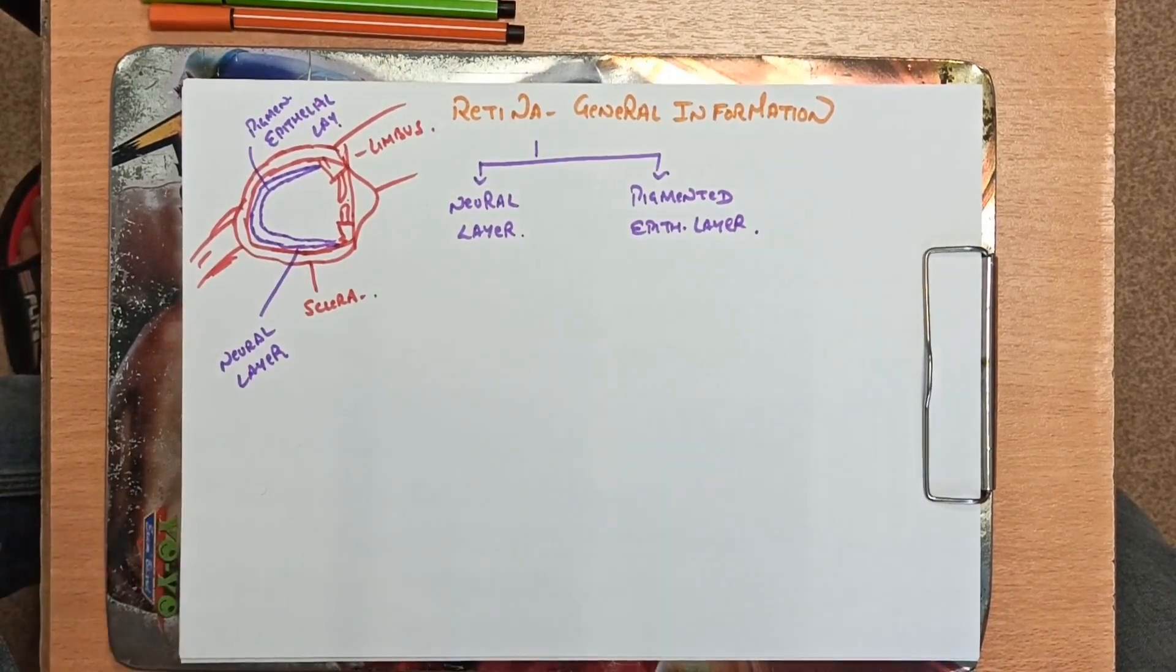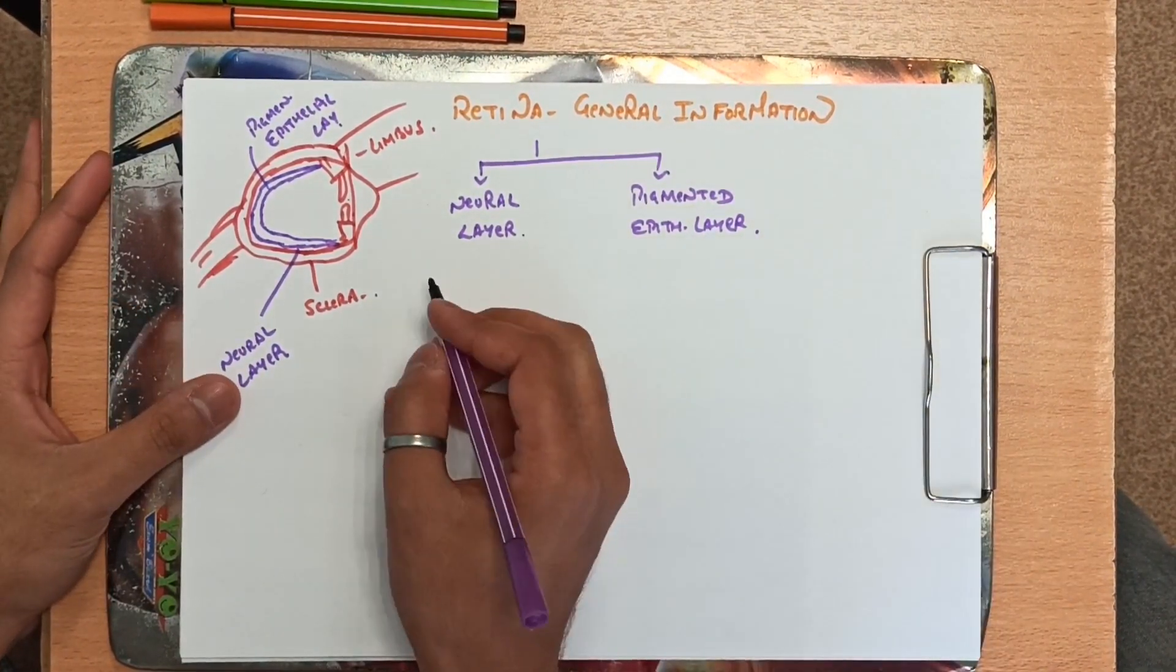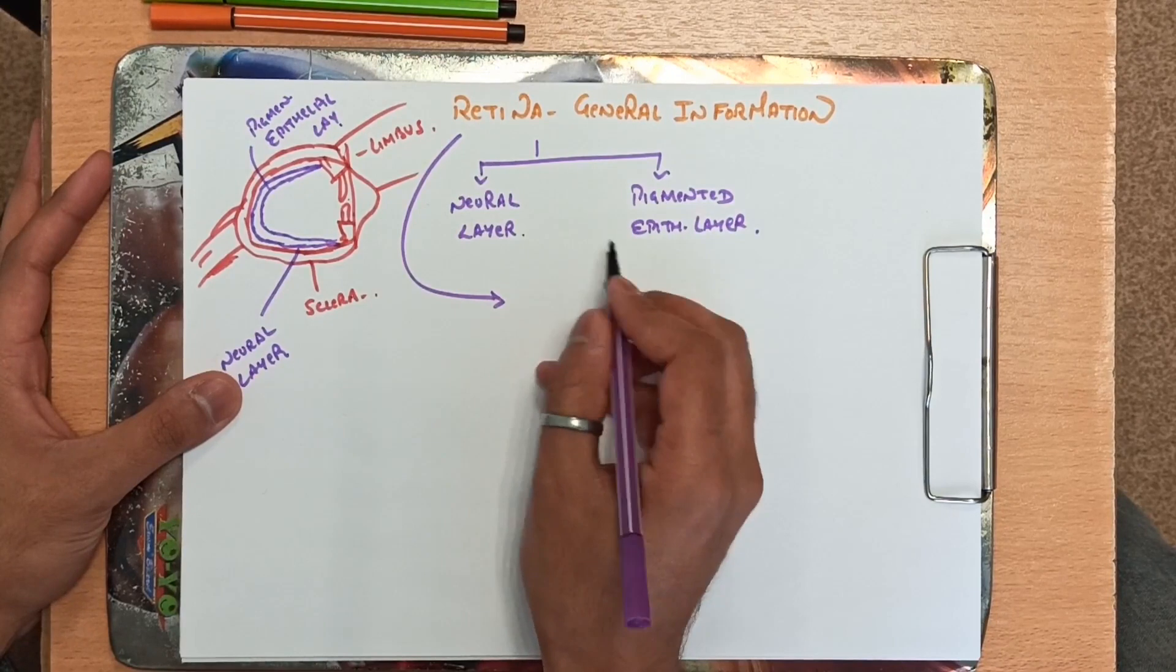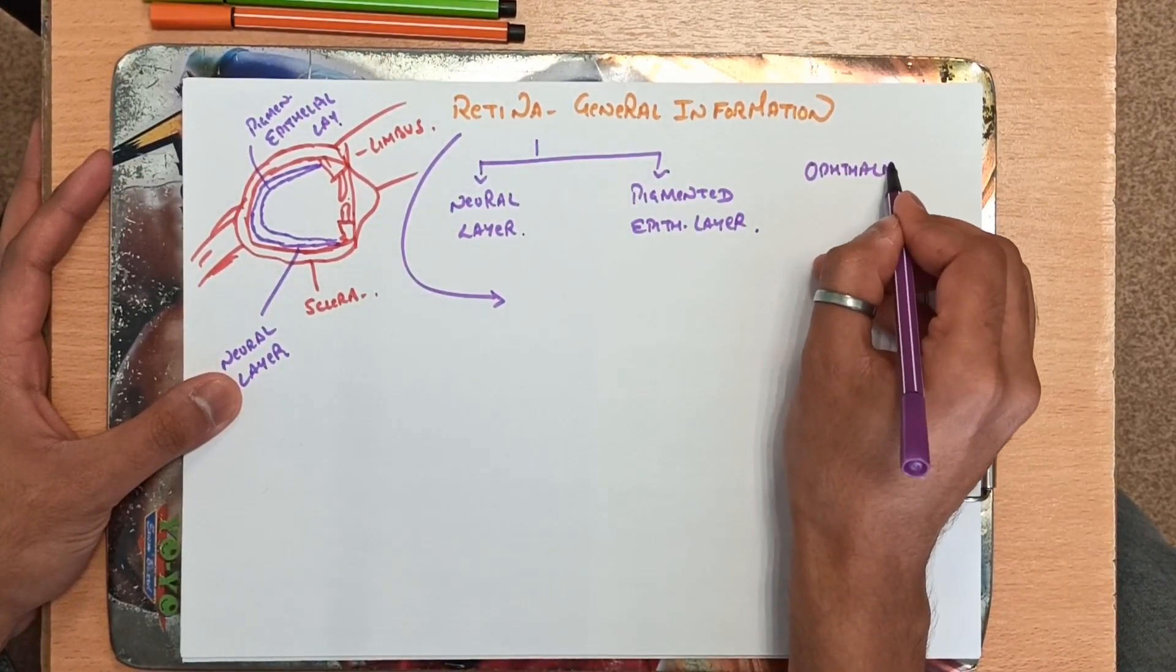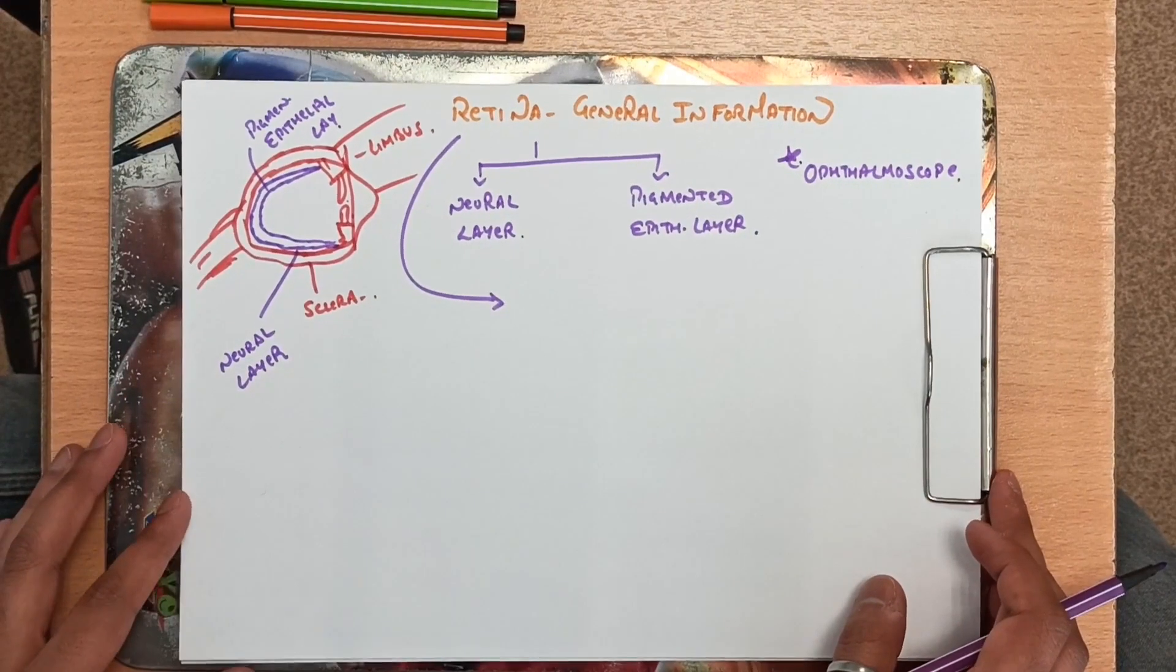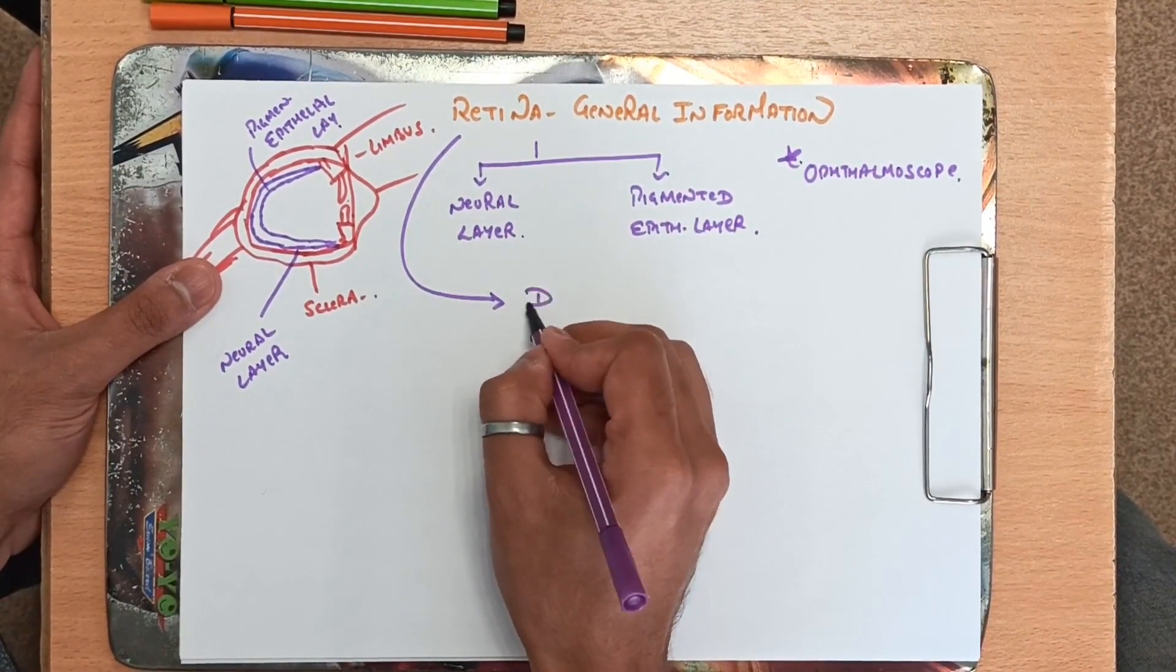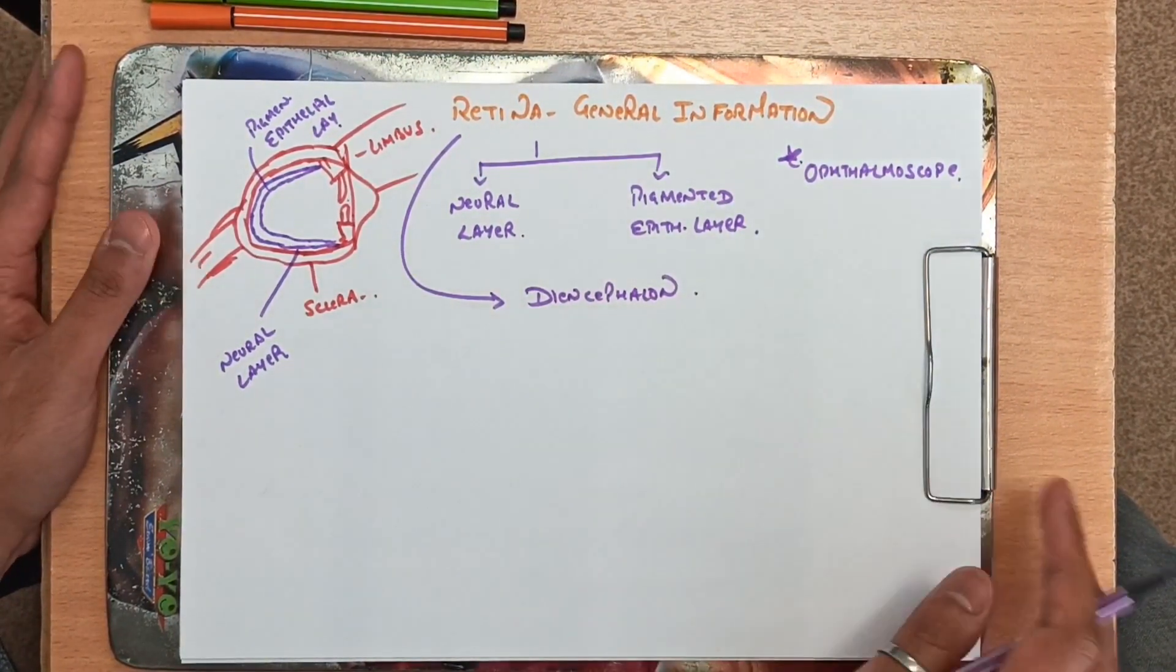Now first of all let me tell you some information about how these two layers are formed. During the development of the embryo, when further development takes place, retina is the only part of the central nervous system which can be seen from an ophthalmoscope. Ophthalmoscope is a device used to study the inner parts of eye.